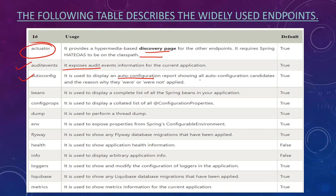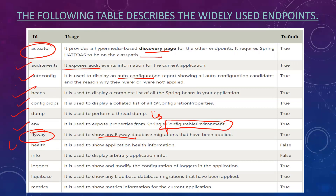The beans endpoint gives information about which beans have been initialized in the application context. The config-props endpoint displays a collated list of @ConfigurationProperties. The dump endpoint gives you a thread dump of your application at any point in time. The env endpoint exposes properties from Spring's configurable environment. The flyway endpoint shows any Flyway database migrations that have been applied. The health endpoint shows application health information.